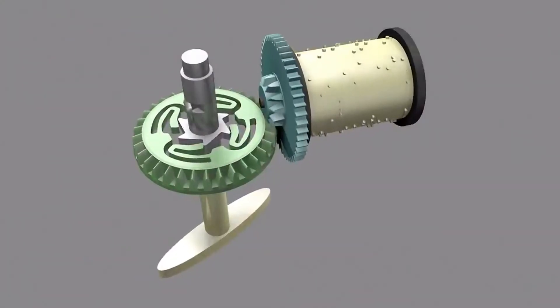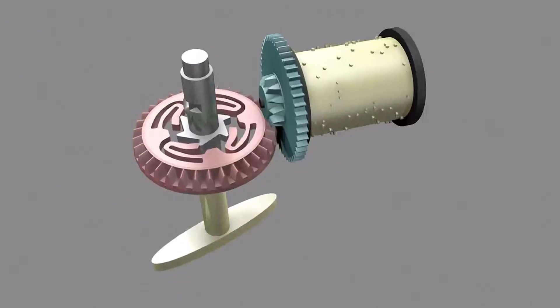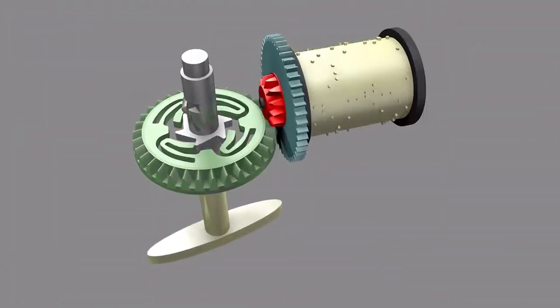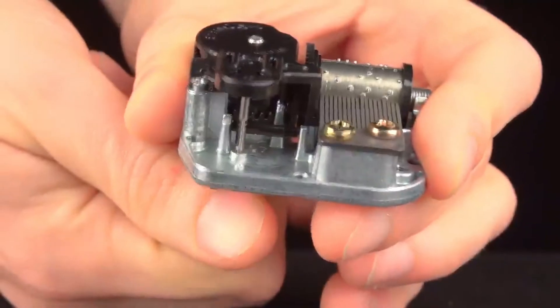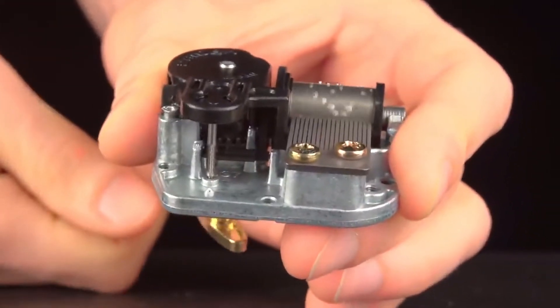As the spring unwinds, it rotates this bevel gear, which engages a second bevel gear affixed to the drum. But there's a problem with this setup. The spring will unwind quickly and the music will play too fast.